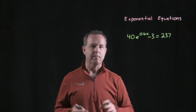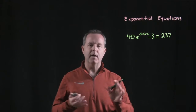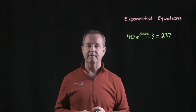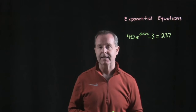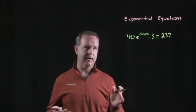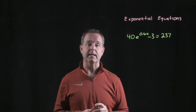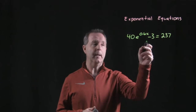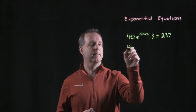Solving another equation, much similar to what we've done before. We want to try to isolate the variable term, then isolate the variable. So how do we do that? First of all, let's isolate the variable term by adding 3 to both sides.